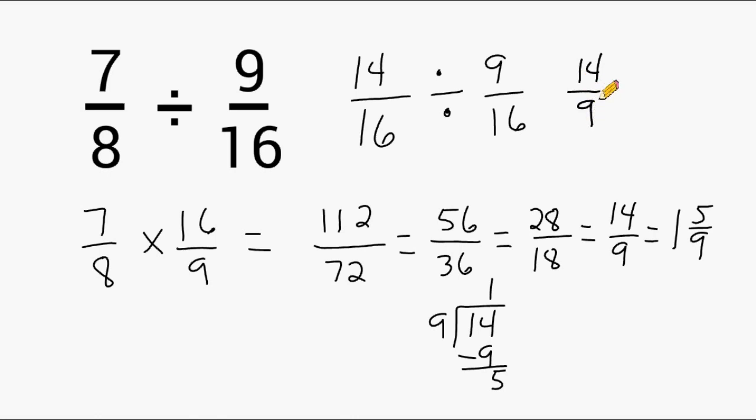And notice that is the same thing that we got when we did the keep change flip method after we did all of our reducing. And we already know that 14 over 9 is equal to 1 and 5 ninths.